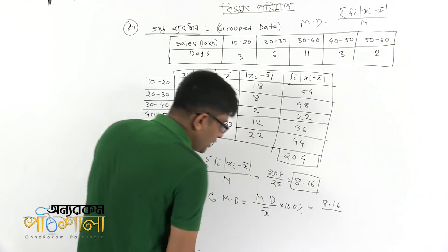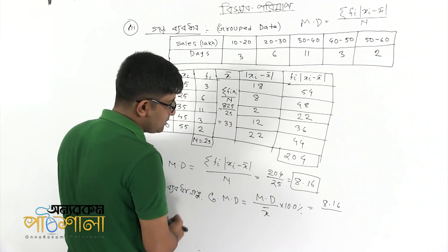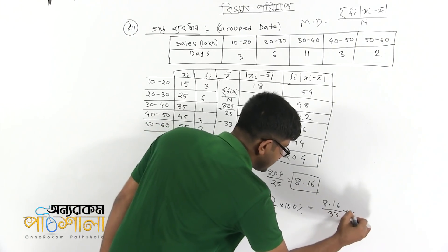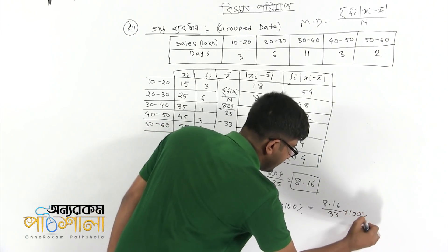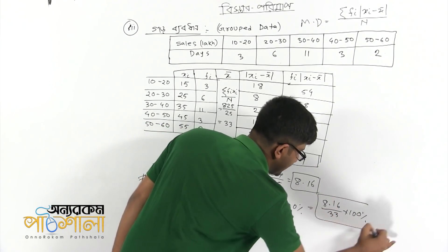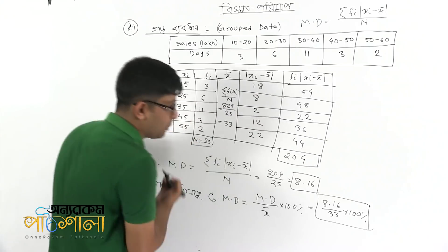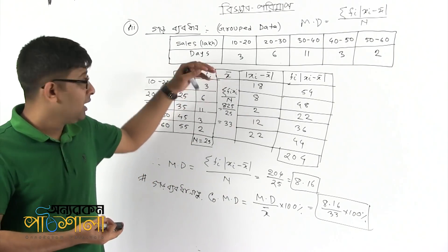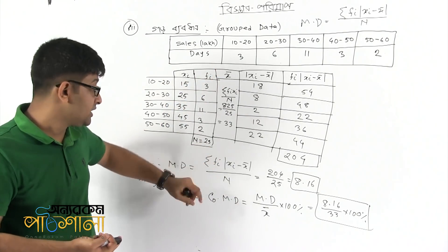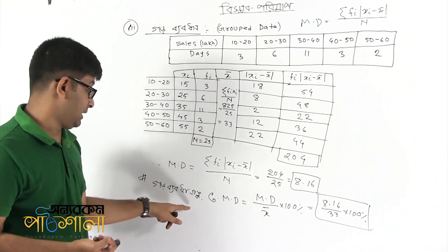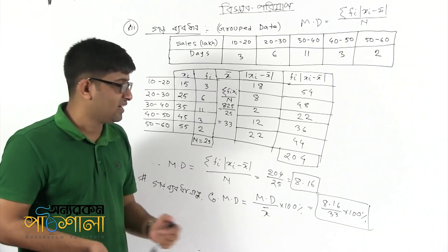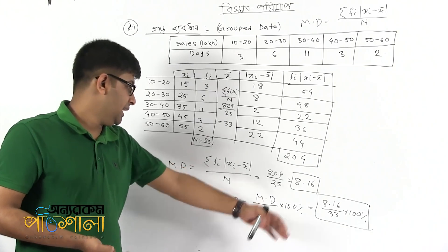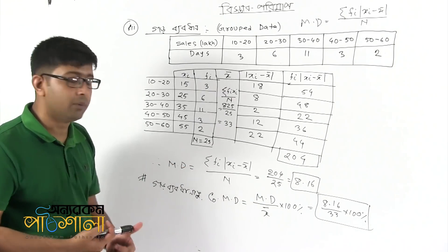So what do we move to? The x-bar is 33. Mean deviation divided by x-bar, multiplied by 100%. This gives the coefficient of mean deviation. The main deviation was approximately 11, so the average value gives 100% — this is the coefficient of mean deviation.